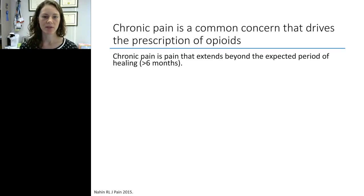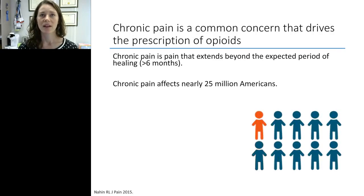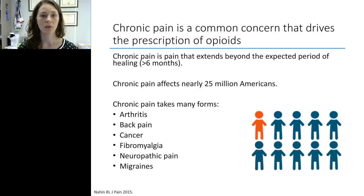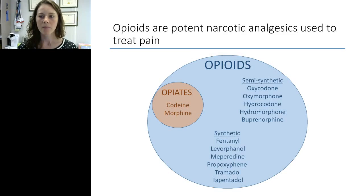Chronic pain is any sort of pain that extends beyond the expected period of healing, which is around six months — so it's different than just a short, acute week-long course of medication. Chronic pain is a huge problem. A recent study estimated about 25 million Americans suffer from chronic pain, around one in ten, something like 11% of people. Chronic pain can take a variety of forms: arthritis, back pain, cancer pain — which is sometimes considered a special subtype — migraines, myalgias. There's a lot of different clinical considerations that fall under the umbrella of chronic pain.